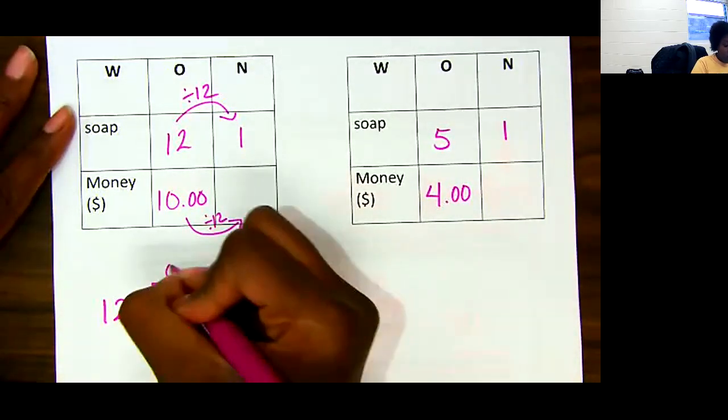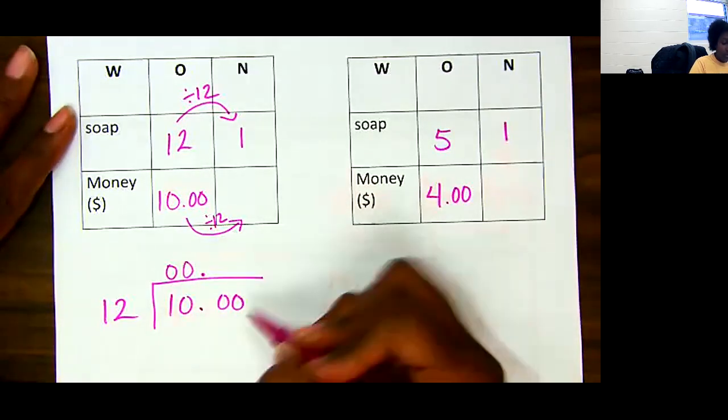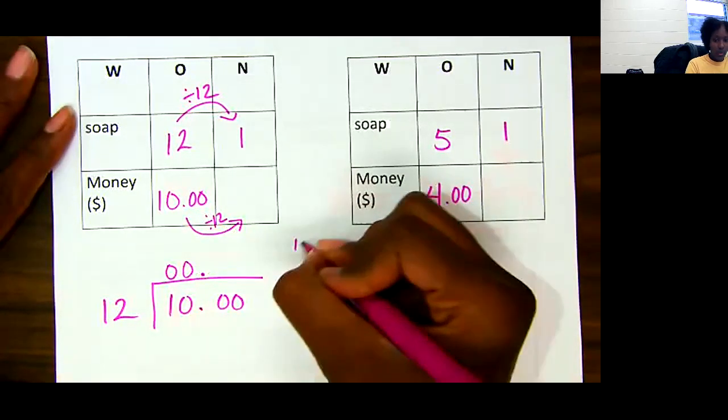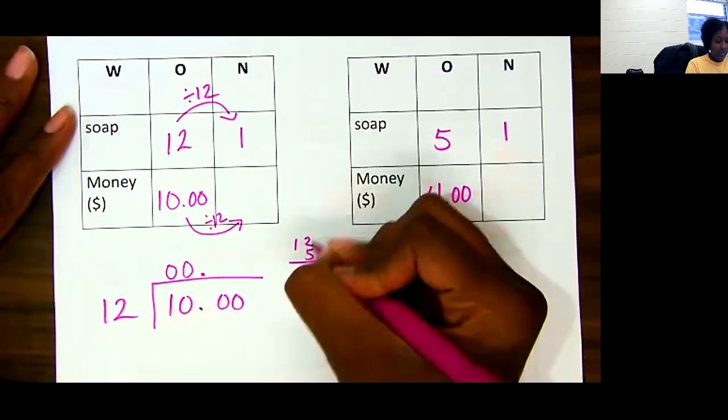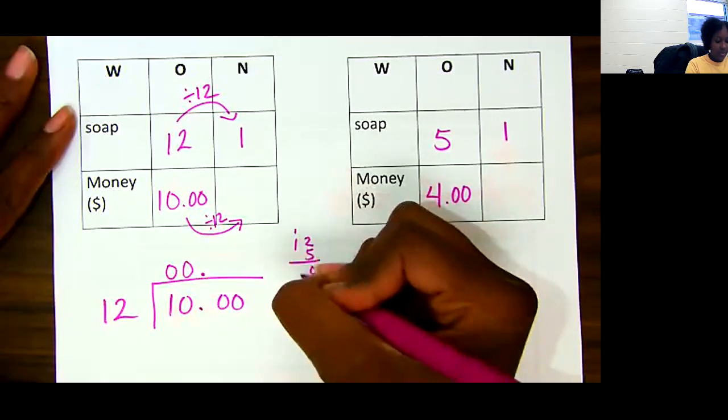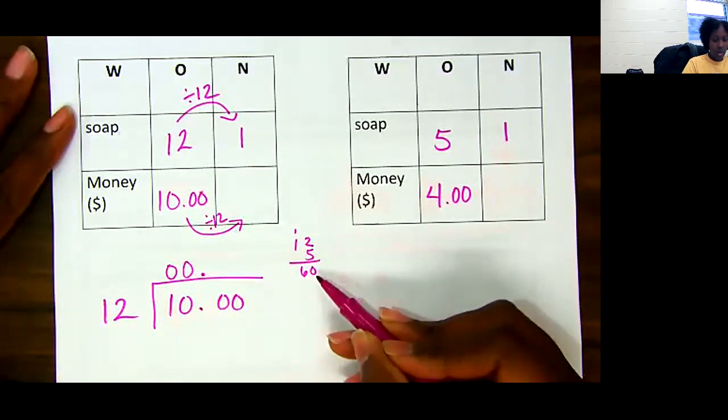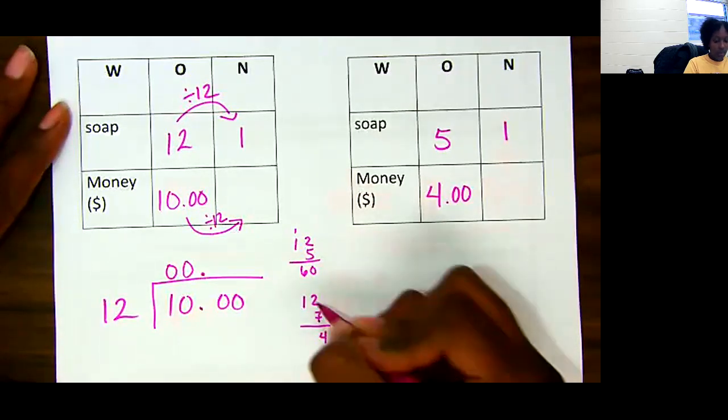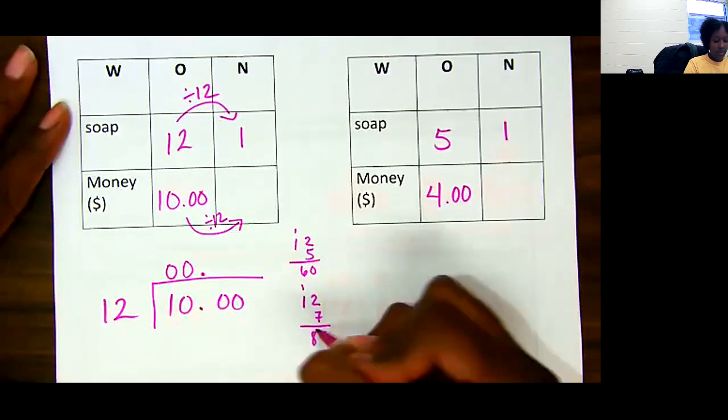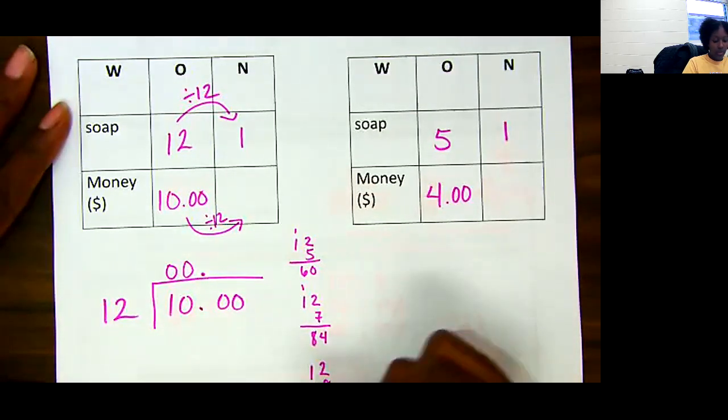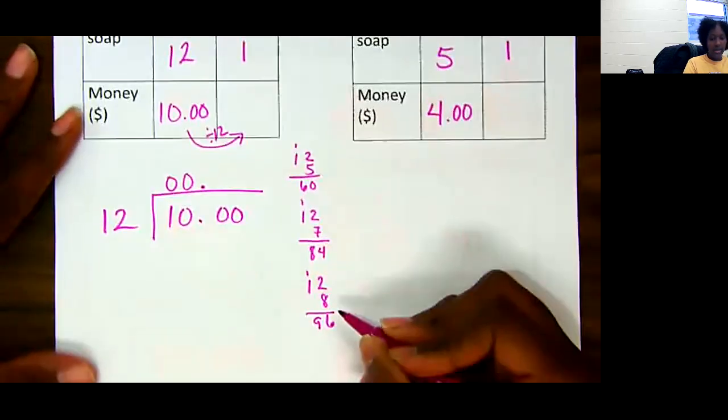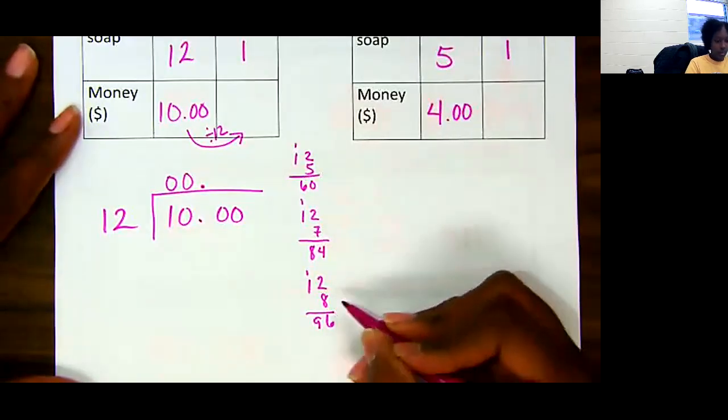12 can't go into one. 12 can't go into 10. So I have to start here. 12 into 100. I need some scratch work. 12 times 5, let's see what that gives us: 10, 5, 6. Almost there. Let's try 12 times 7: 14, 7, 8. A little bit closer. Let's try 12 times 8: 16, 8, 9. 96 is probably as close as we're going to get, so we're going to use 8.